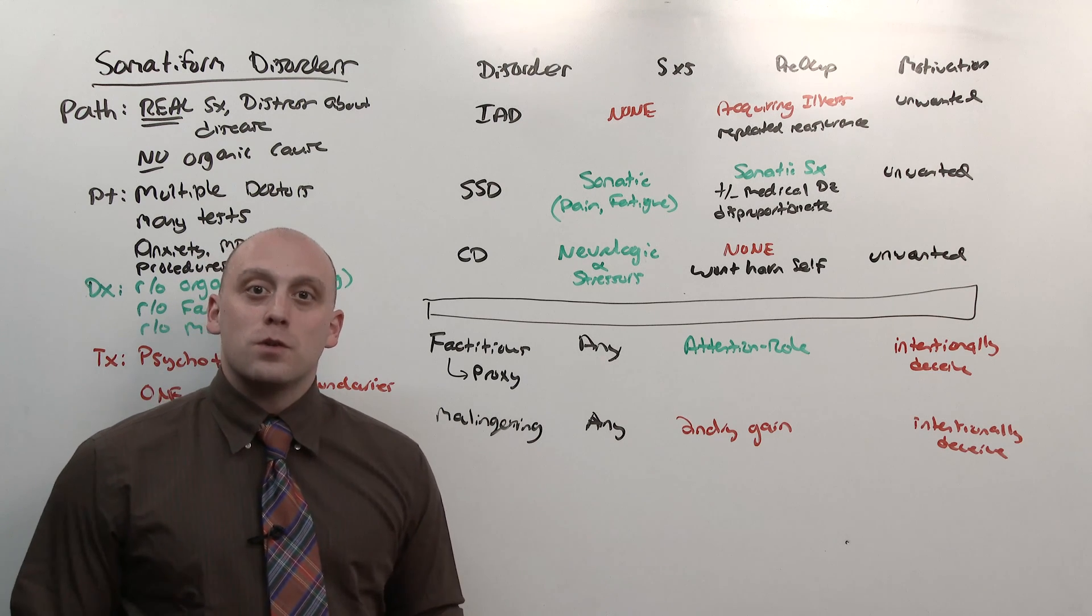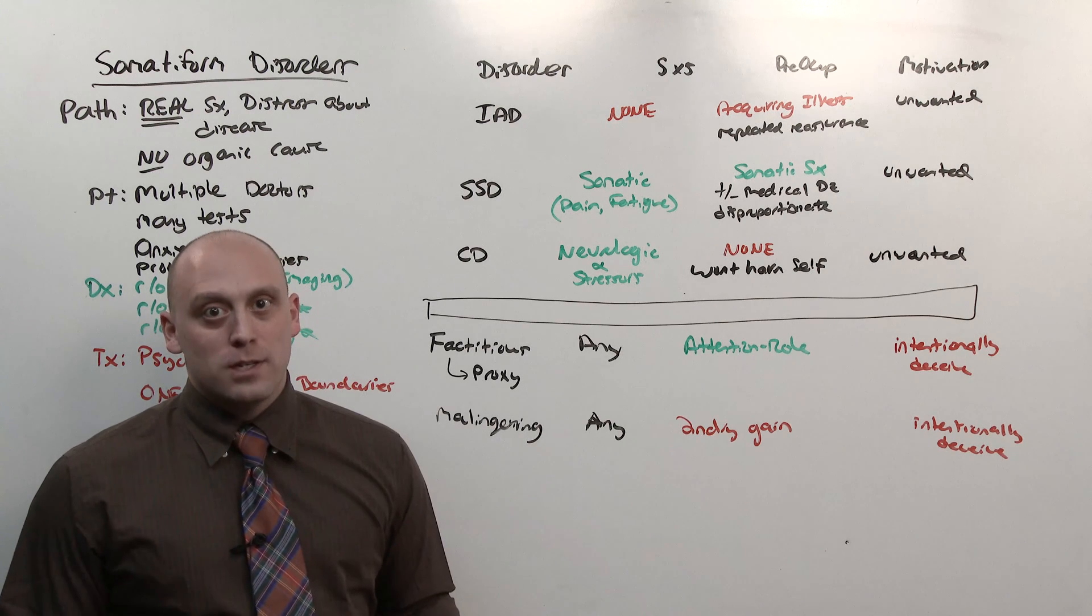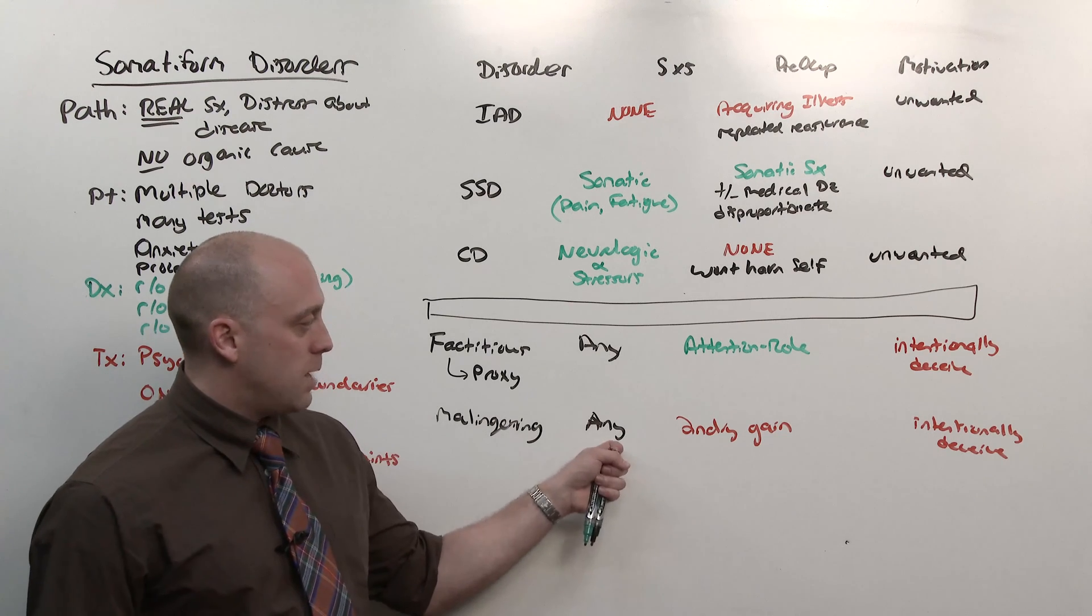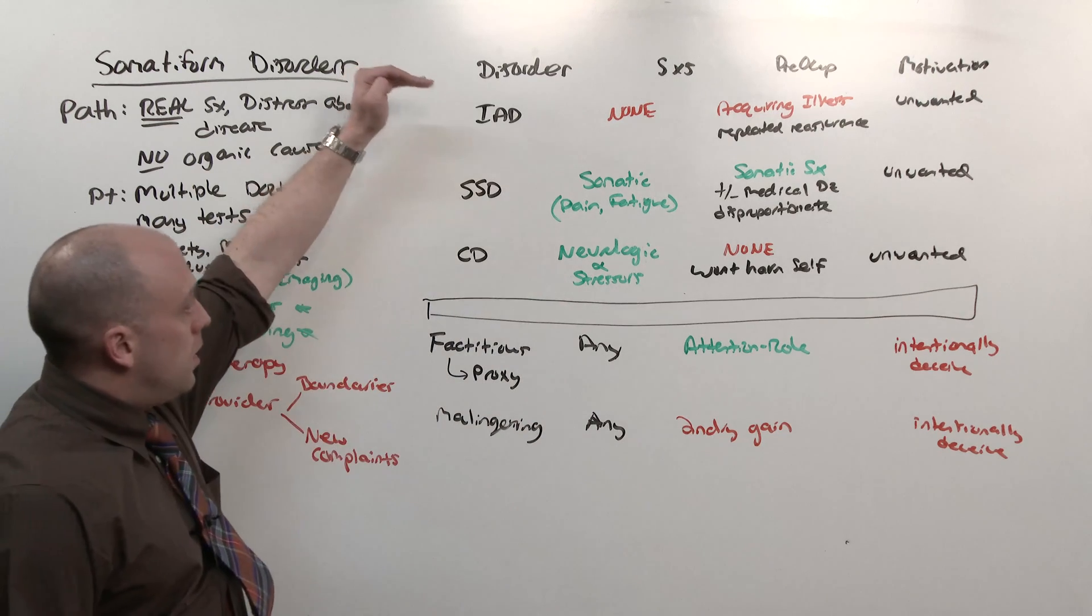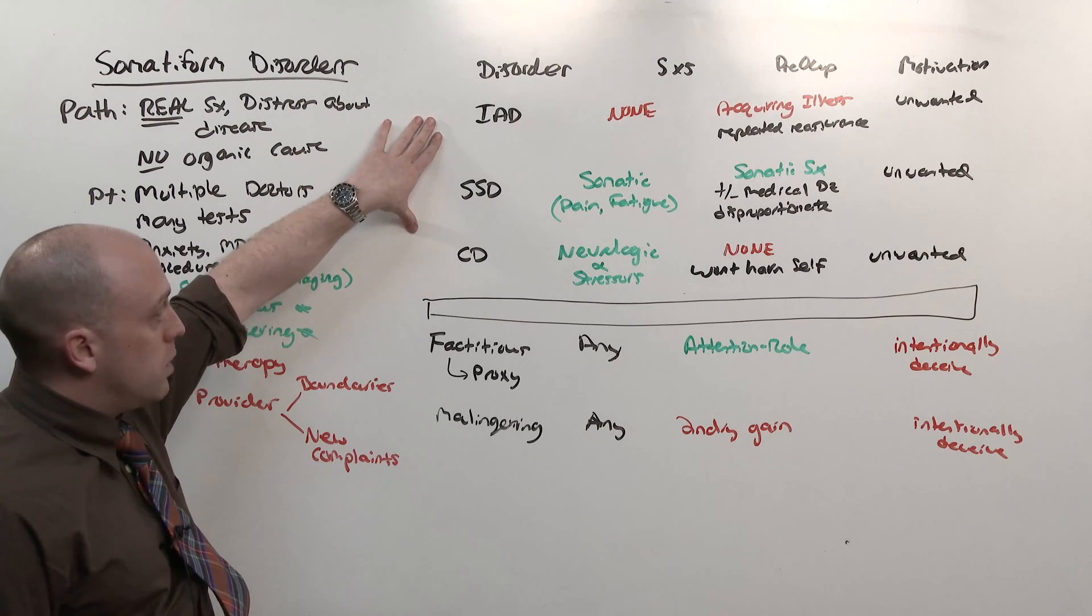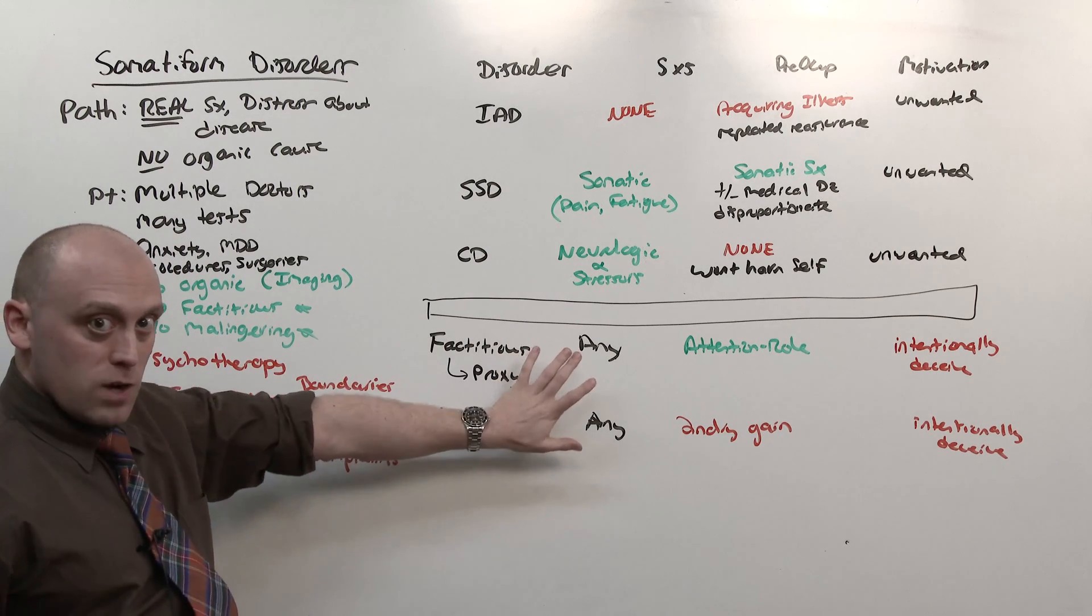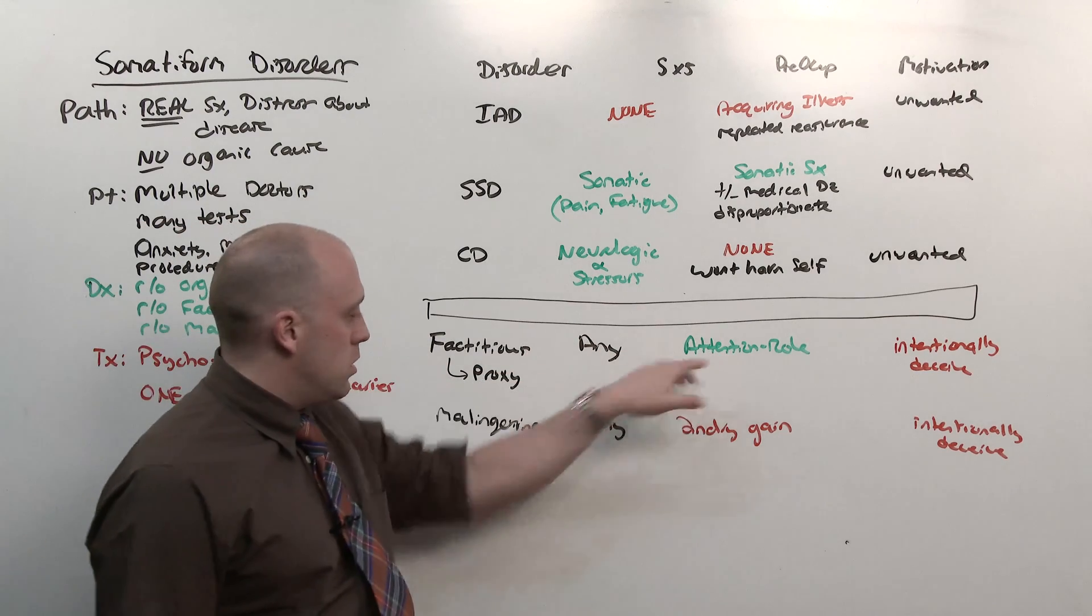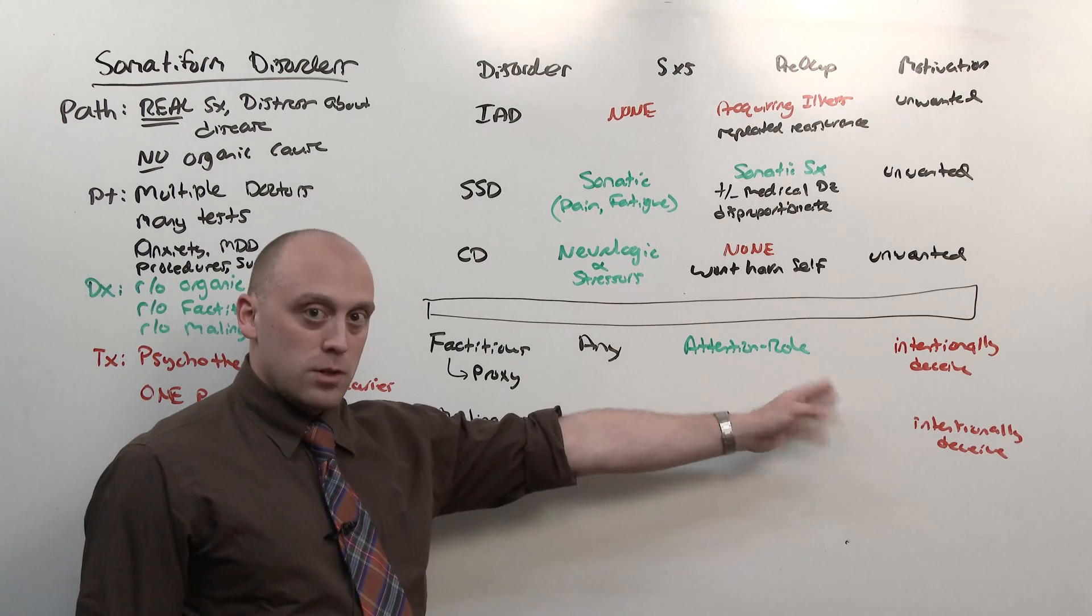Check out the dissociation lesson for more on dissociation disorders. When Walter goes on his dissociative fugue, he says it's in response to learning that he has cancer. When really, it's in response to avoiding capture by the police. He fakes his fugue state to avoid capture. That's malingering. If you compare these all five together, IAD, SSD, and conversion disorder are unwanted, usually in response to a psychological stressor. The symptoms and the preoccupation separate them.